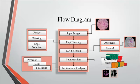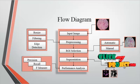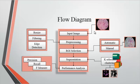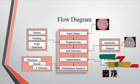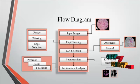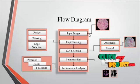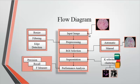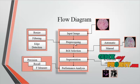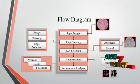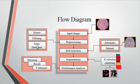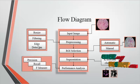Now we discuss the flow diagram for the process. This is the overall flow diagram. First, the input image is taken from the dataset. The dataset images consist of several affected regions and affected cells. After getting the input image, pre-processing is carried out. In pre-processing, we consider three major steps: image resizing, image filtering, and edge detection.